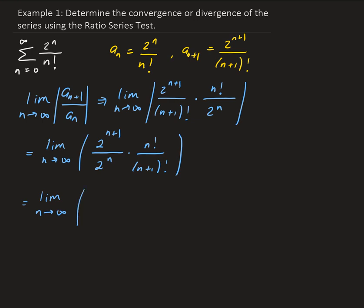Now let's use some algebra to simplify. Remember that b to the (n+1) is the same as b to the n times b to the 1. So we can use that property here: 2 to the (n+1) becomes 2 to the n times 2, divided by 2 to the n.